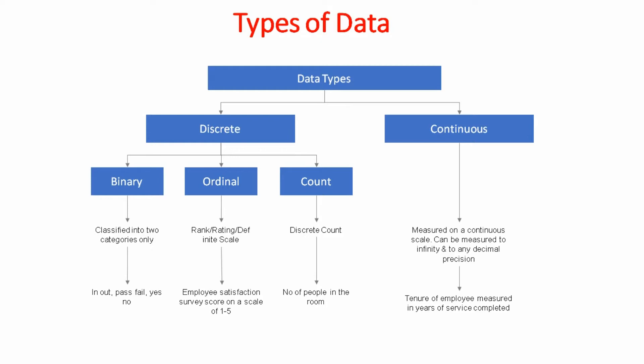So the difference between continuous and discrete data is, you cannot break discrete data into decimals. For example, if a survey score rating is from 1 to 5 and you want to rate 4.5, you cannot rate it as 4.5. You can either rate it as 1, 2, 3, 4 or 5. And similarly, in case of count data, you cannot say that I have taken 4.5 calls today. Either you have taken 4 calls or 5 calls. The difference between discrete and continuous data is that you cannot write discrete data with decimals.